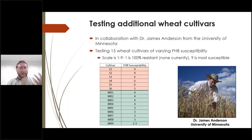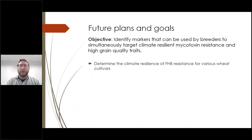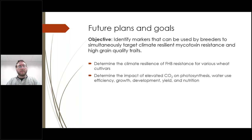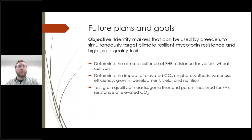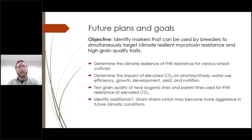We are trying to identify cultivars which are both climate resilient and disease resilient with excellent grain quality and disease resistance. Our future goals are to identify markers that can be used by breeders to simultaneously target climate resilience, mycotoxin resistance, and high grain quality traits. We want to test cultivars to determine overall climate resilience and FHB resistance, determine the impact of elevated CO2 on photosynthesis, water use efficiency, growth, development, yield, and nutrition. We also want to test grain quality of near-isogenic and paired lines used for FHB resistance at elevated CO2, and identify additional Fusarium graminearum strains which may become more aggressive in future climate conditions due to changes in nutrient composition.